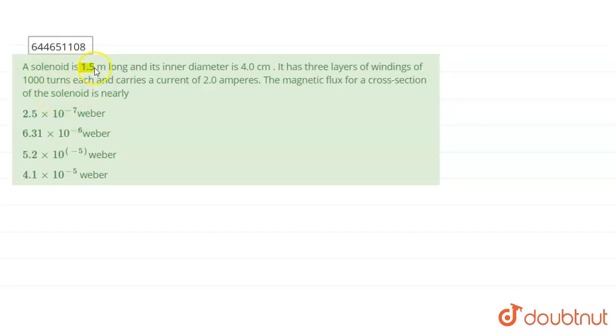Hello students, it is given in our question: a solenoid is 1.5 meters long and its inner diameter is 4 centimeters. It has three layers of windings of thousand turns each and carries a current of 2 amperes. The magnetic flux for a cross section of the solenoid is nearly—four options are given here corresponding to the value of the magnetic flux.